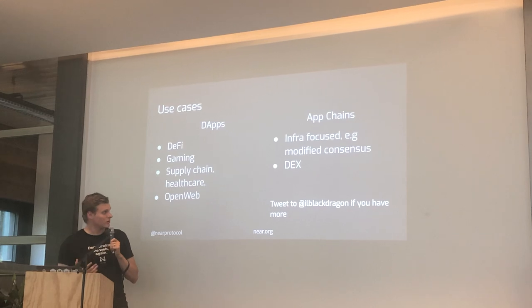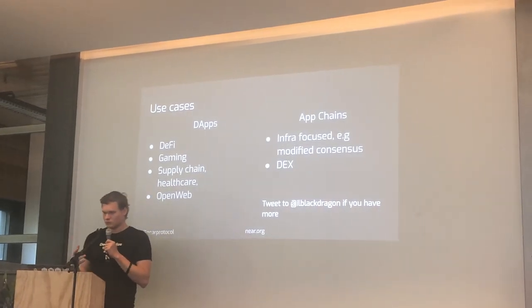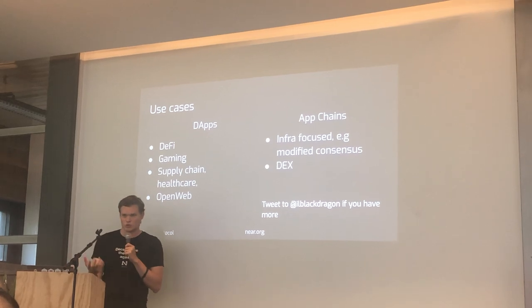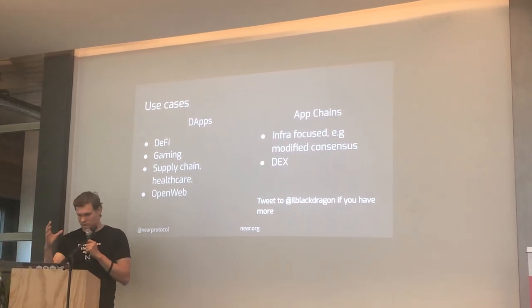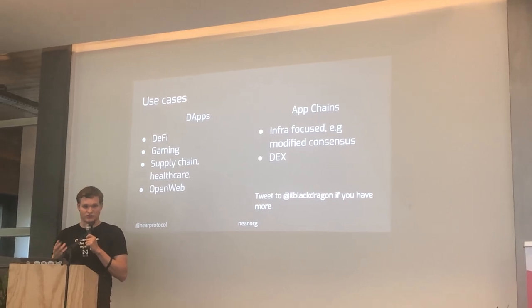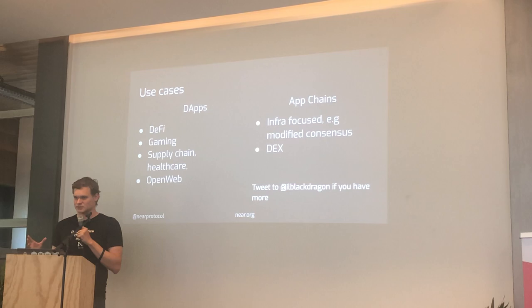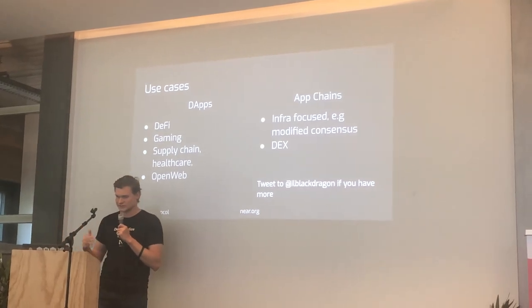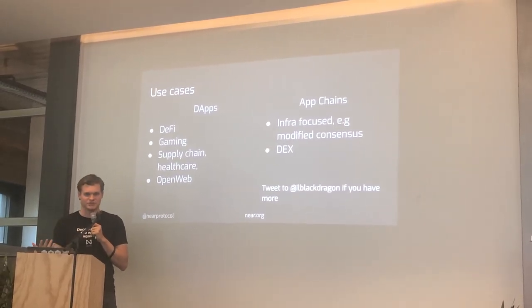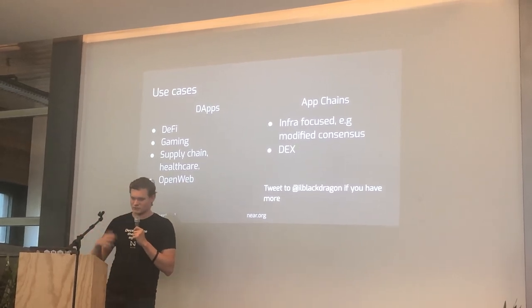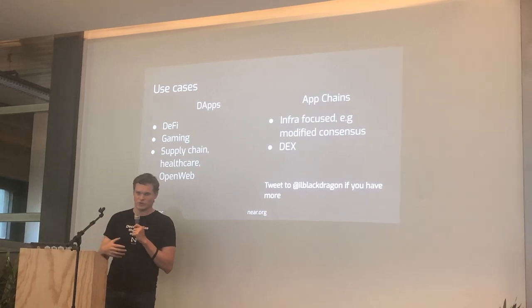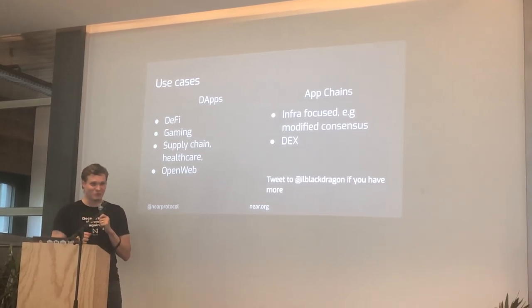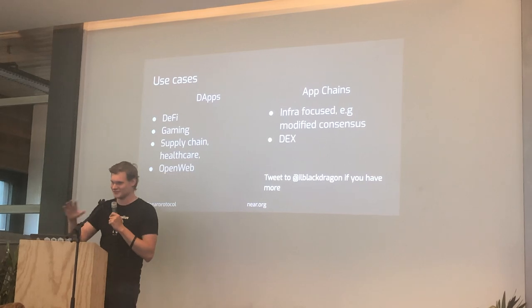App chains are very well-suited for infrastructure-focused applications — if you need to modify consensus, integrate custom storage, or something like that. Also for DEXes, which don't want to share throughput with anyone else, since other transactions can expose you to front-running. But dApps are where we actually want most applications to be: gaming, DeFi, supply chain, healthcare, tracking, and open applications — which we believe is the way to decentralize the internet again. If you disagree, please tell me, because I'm writing a blog post and want feedback.